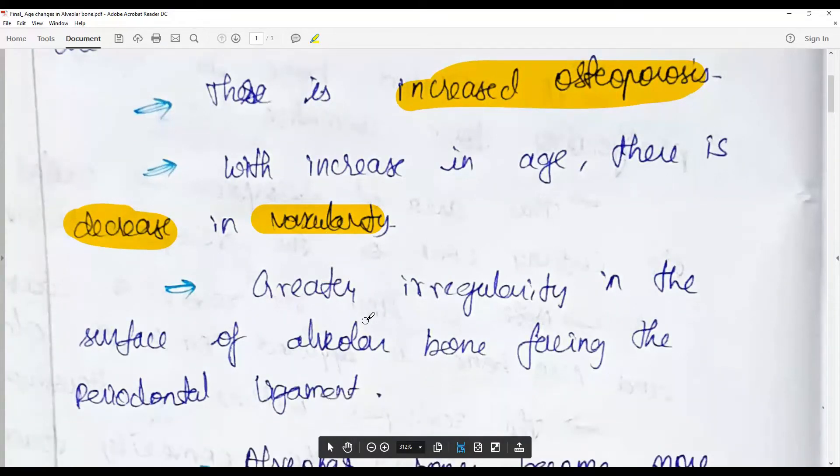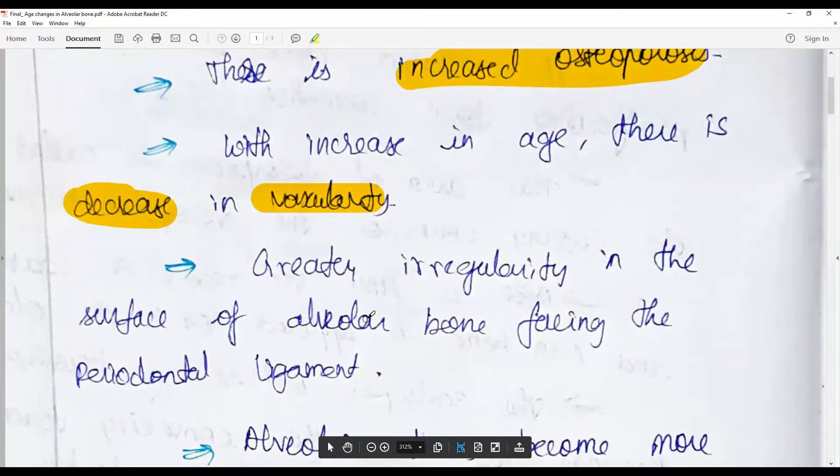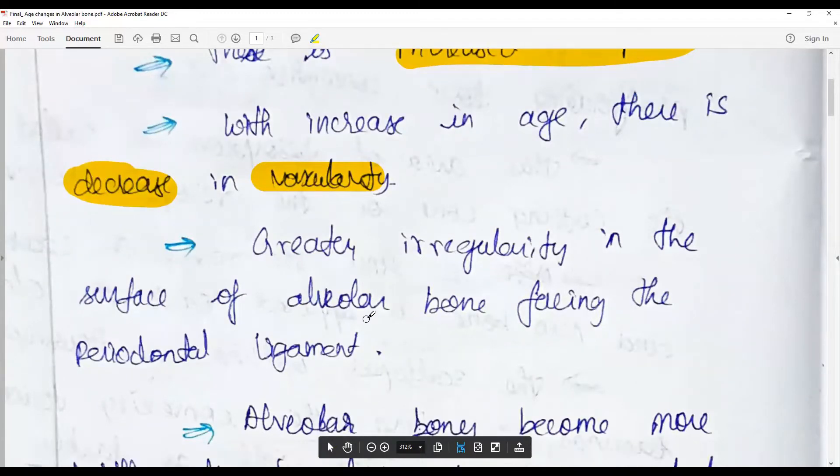With the presence of periodontal pathogens, the periodontal ligament may undergo slow changeover, so there is always a risk of surface irregularity of the alveolar bone facing the periodontal ligament.